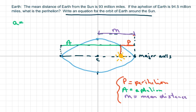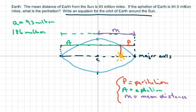So a equals 93 million miles. The whole length, 2a, would be 186 million miles. That's the length of the major axis — 186 million, which is just 2a, so we multiplied 93 million by 2.